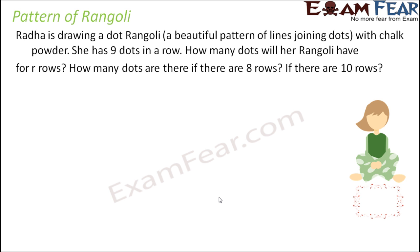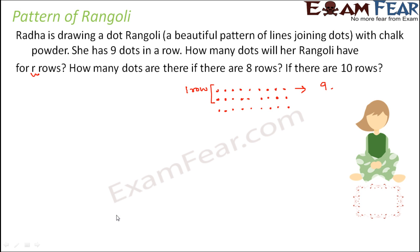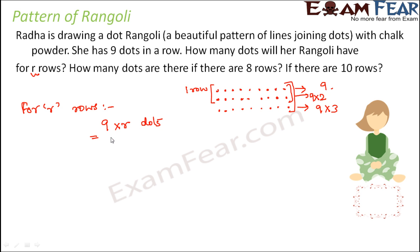Let's look at another example. Radha is drawing a dot Rangoli — a beautiful pattern of lines joining dots with chalk powder. She has nine dots in a row, something like this. How many dots will the Rangoli have for R rows? R is a variable. In one row there are nine dots, so in two rows you would have 9 into 2 dots, in three rows 9 into 3 dots. Therefore, for R rows you would have 9 into R, which is 9R dots.